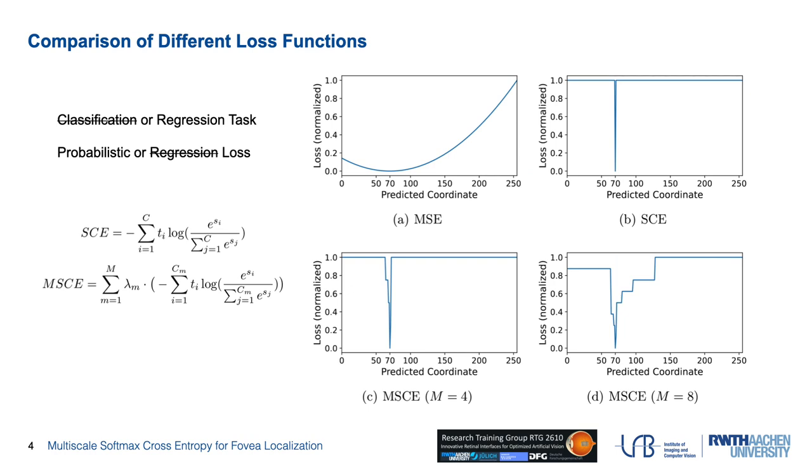Now we are applying the multiscale version of a representative probabilistic loss, cross-entropy, in a regression task, which however, used to deal with classification tasks. On the right side, different loss functions are compared with a toy example, where we assume the 70th of a 256-dimensional vector as the ground truth, and the normalized loss values are calculated for each possible prediction.